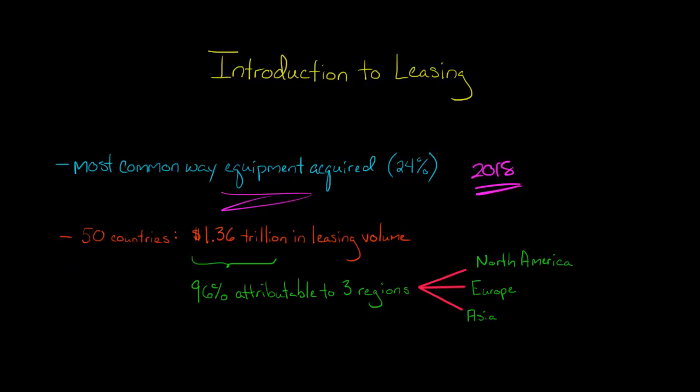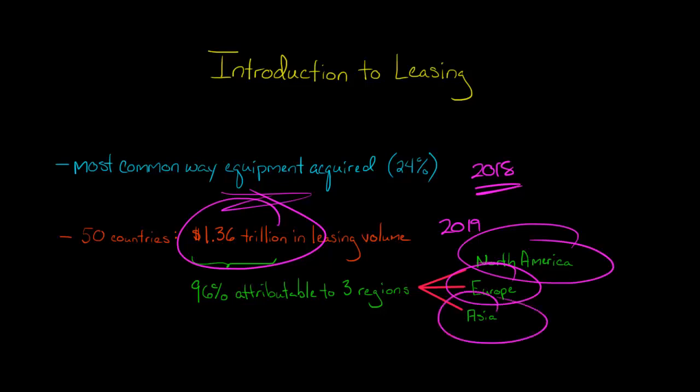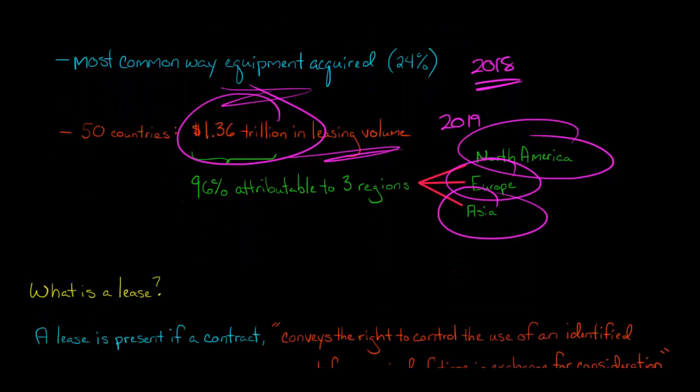The top 50 countries in terms of lease volume did $1.36 trillion in leasing volume in 2019, and this was almost all within three continents: North America, Europe, and Asia. They really dominate the market when it comes to leasing volume. So the market for leasing is huge.